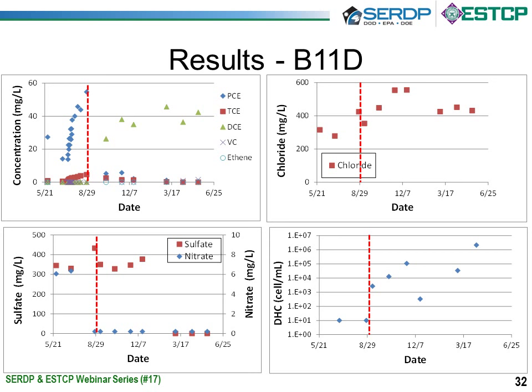The deep zone at B11D tells a very similar story — a lot of dechlorination, a lot of chloride generation. We also got good nitrate and sulfate reduction, noteworthy because we had fairly high sulfate levels at the site between about 300 and 400 milligrams per liter. Prior to bioaugmentation, we didn't see any measurable Dehalococcoides in the fractured bedrock. Then concentrations increased several orders of magnitude over time, suggesting growth and migration of the bacteria. We also saw Dehalococcoides show up at the next furthest monitoring well, about 30 feet away.